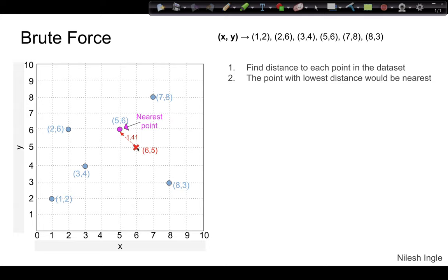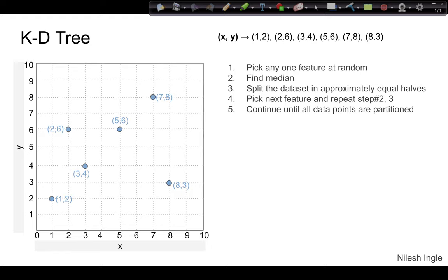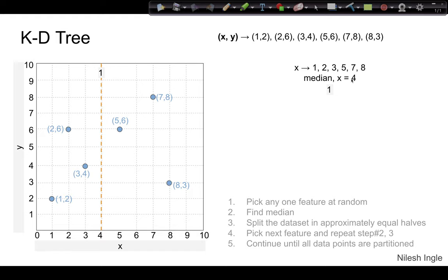In the KD tree method, a tree is constructed first, and then when a new data point comes in, that point is walked along the tree to find the nearest data point. The first step is to pick a feature at random — say we have two features X and Y, so we pick X. We take all the X coordinates, find the median, and divide the dataset into two halves based on that median. Here the X values are 1, 2, 3, 5, 7, and 8, so the median is 4, and we divide the data by the dotted orange line.